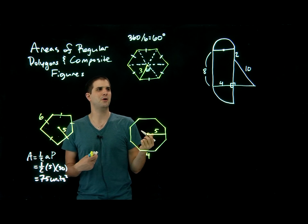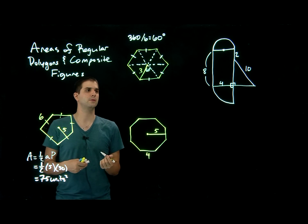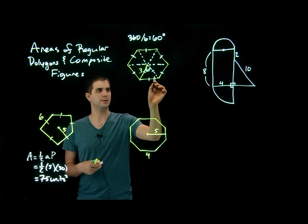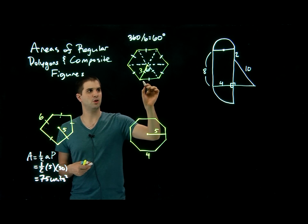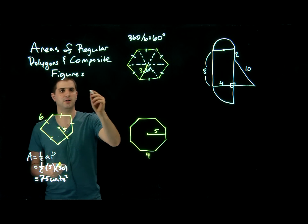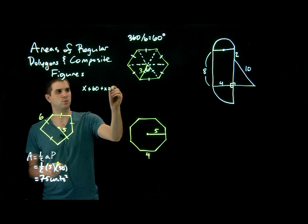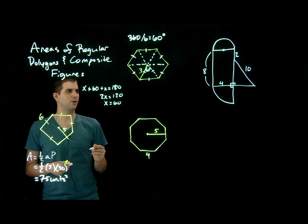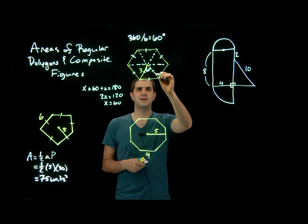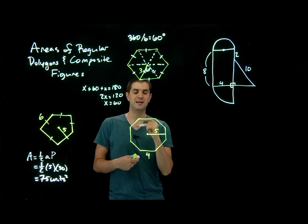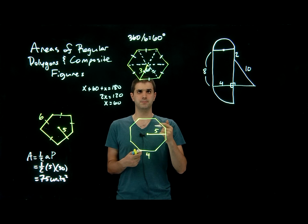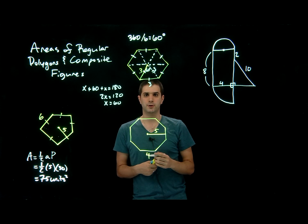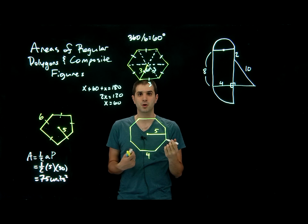We still don't know the apothem or the base, but since that central angle is 60 degrees and the two radii are congruent, the base angles are equal. So x plus 60 plus x equals 180, giving 2x equals 120, so x equals 60. That means all three angles are 60 degrees — this is an equilateral triangle. So if the radius is 3, all sides are 3.